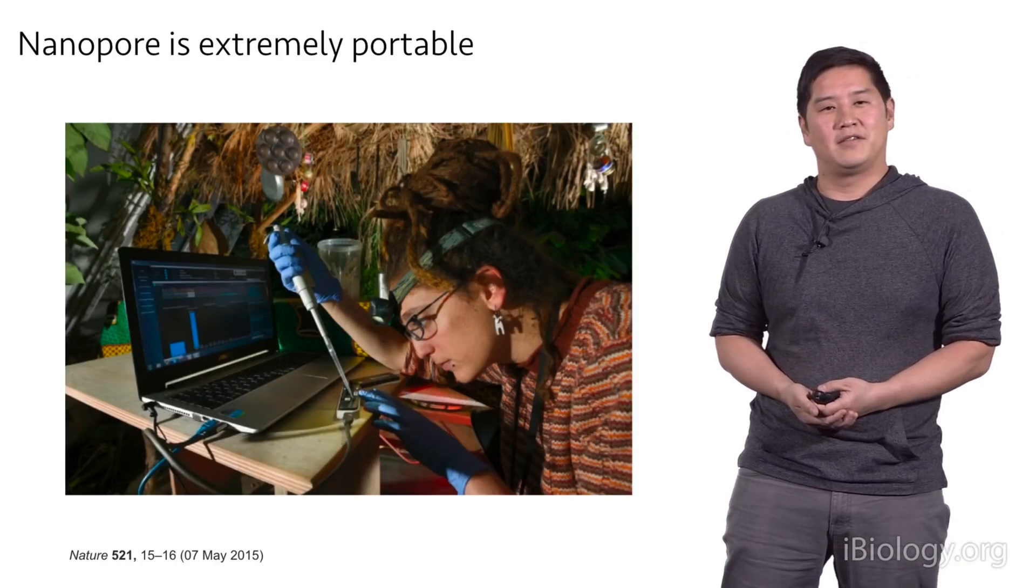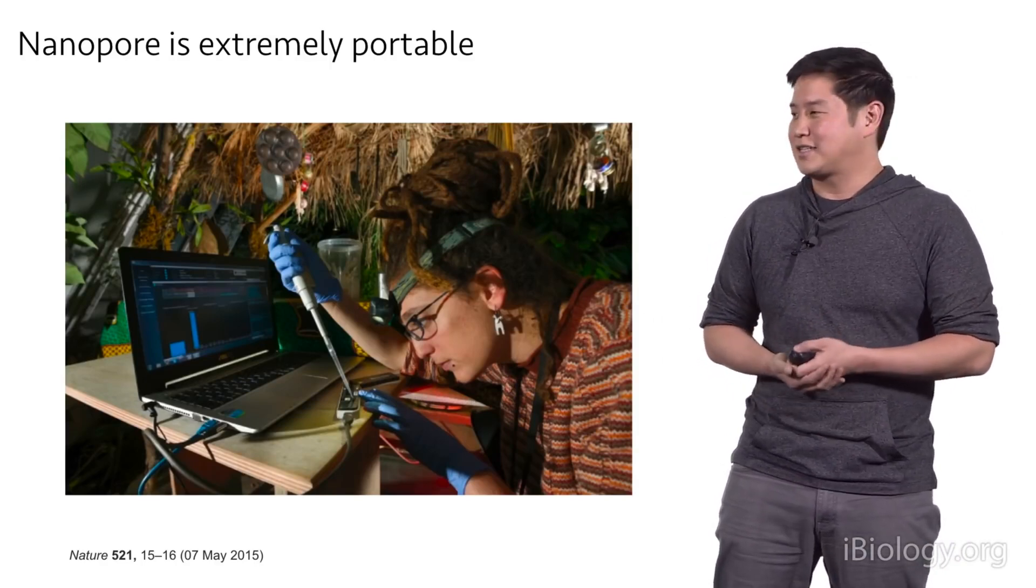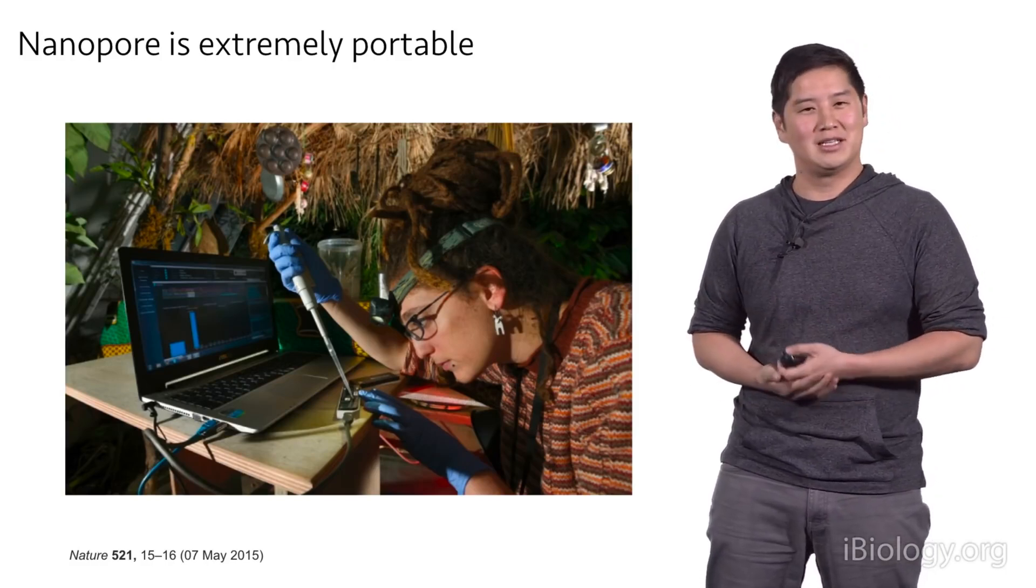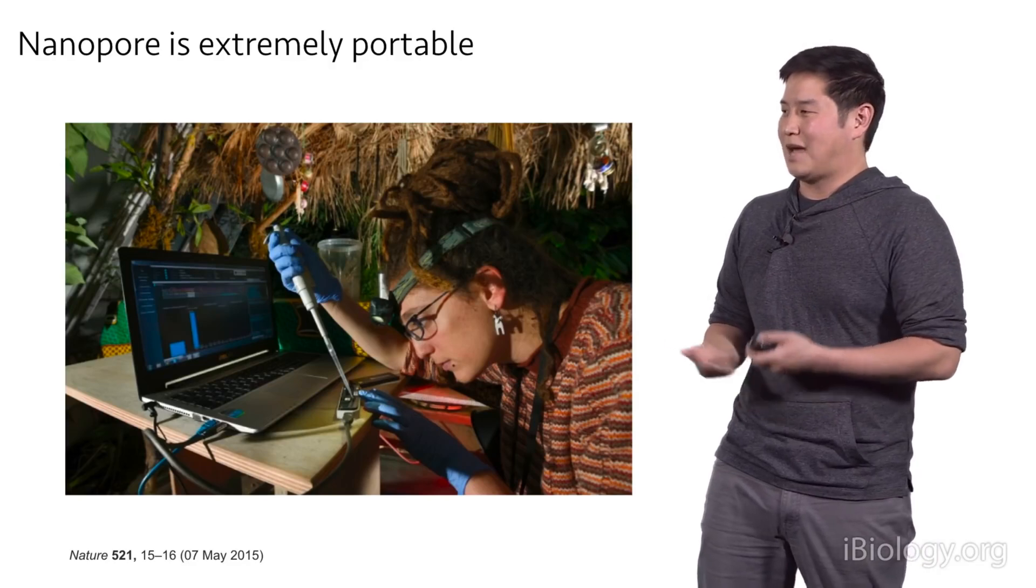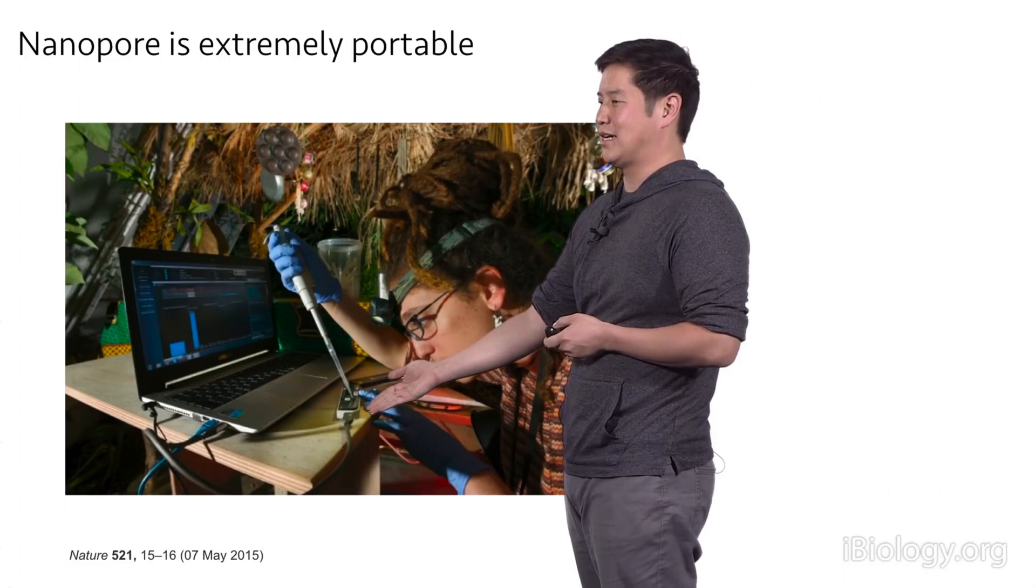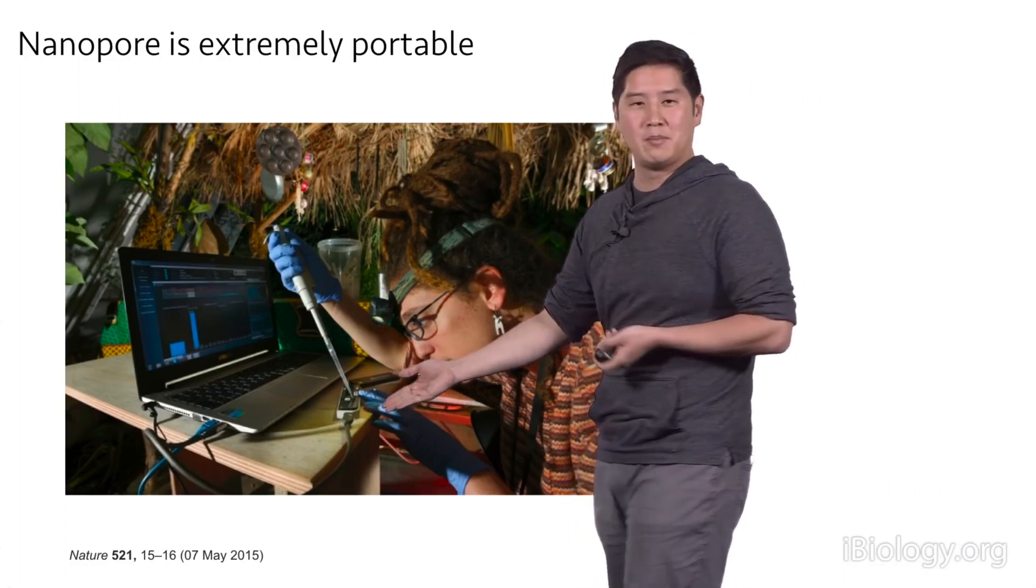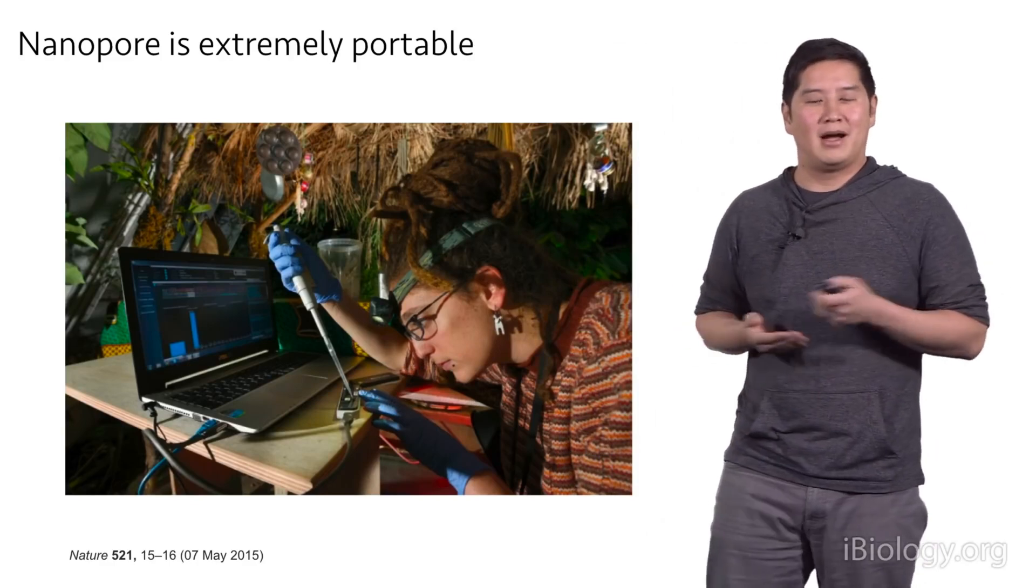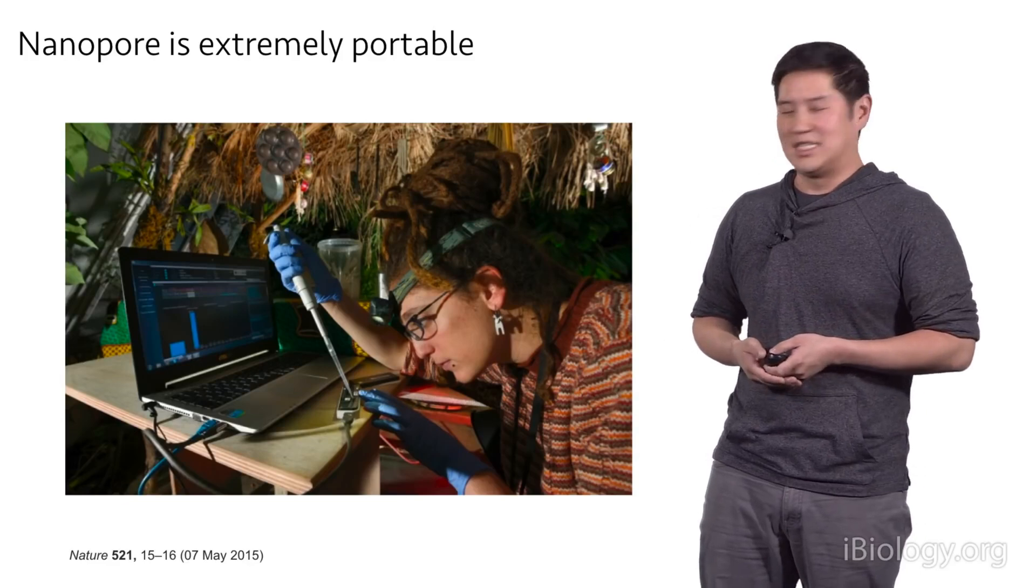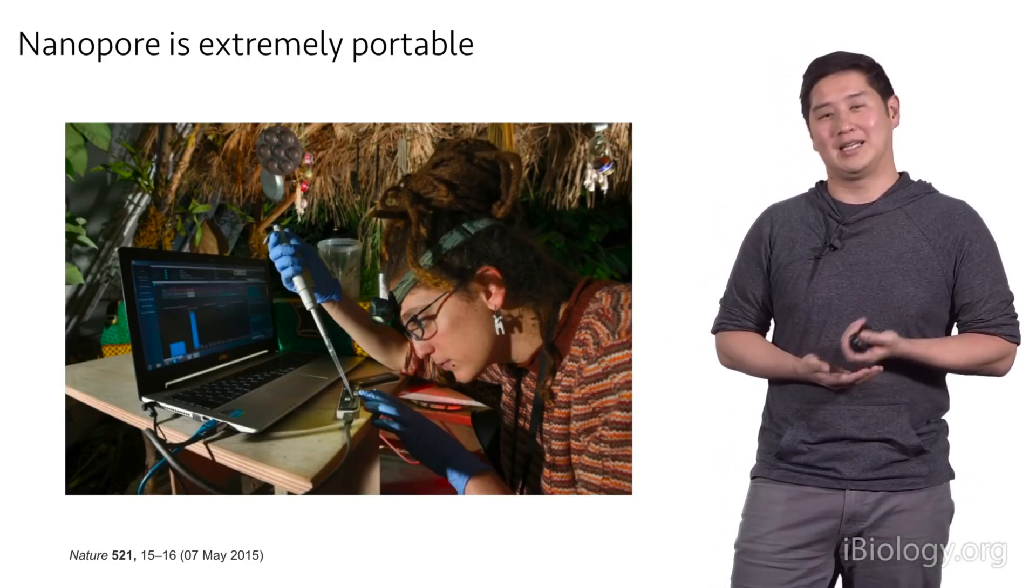The other benefit of the Oxford Nanopore system is that it's extremely portable. You can see this scientist is actually doing some sequencing out in the field. This looks like a jungle somewhere in the world, you can see the foliage in the back. So there's a laptop running the sequencer. And the sequencer is actually the small device that the scientist is pipetting into. It's really the size of a small remote control. And it's powered by the computer that it's attached to. So it means you can really take sequencing anywhere in the world. These systems have even been taken up to the International Space Station for sequencing in space.